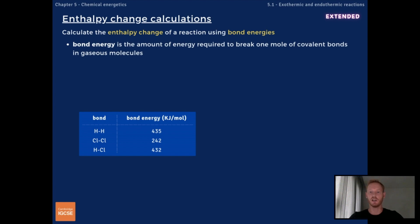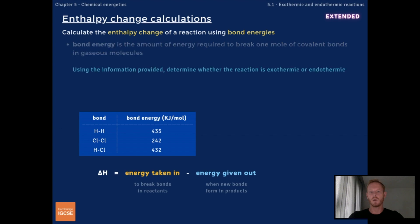For example, the bond energy of chlorine gas, Cl2, is approximately 242 kJ per mole. The equation for bond energy calculations is enthalpy change equals energy required to break bonds minus energy given out when new bonds form. Let's work through an example.